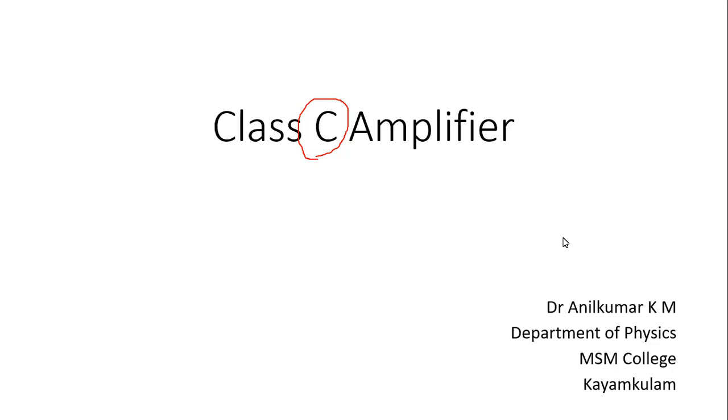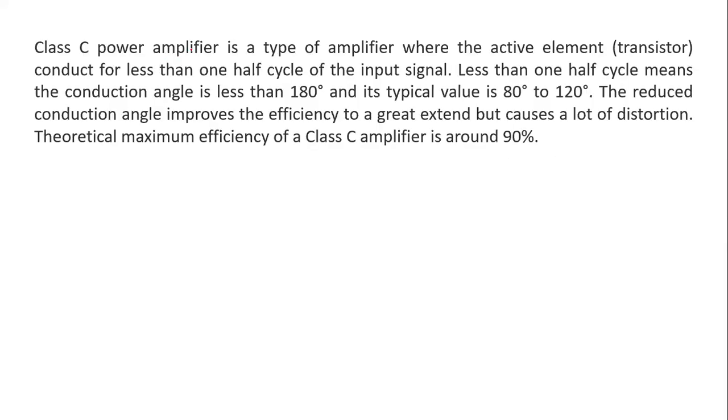Class C power amplifier is a type of amplifier where the active element, which is the transistor, conducts for less than one half cycle of the input signal. Less than one half cycle means the conduction angle is less than 180 degrees, and its typical value is 80 degrees to 120 degrees. The reduced conduction angle improves the efficiency to a great extent but causes a lot of distortion. Theoretical maximum efficiency of a Class C amplifier is around 90 percent.